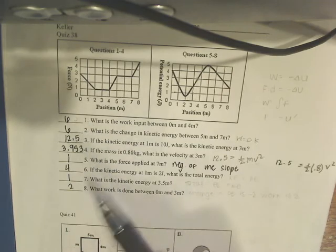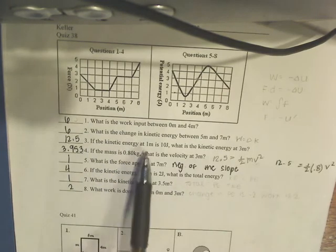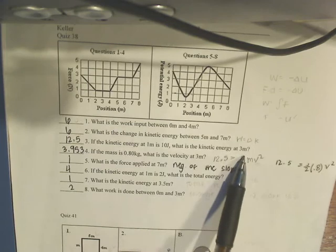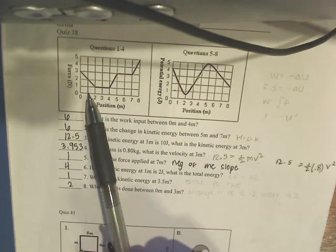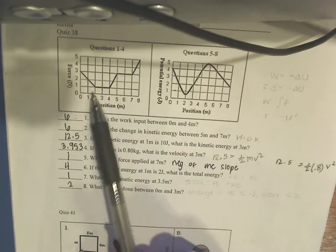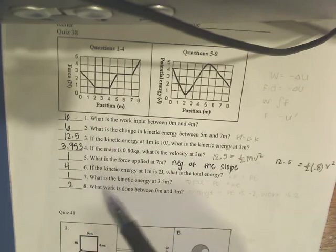So it will be 6, which is the same as 1. If the kinetic energy at 1 is 10, what is it at 3? Kinetic energy at 1 is 10, the integral from 1 to 3 is 2.5, so you do 10 plus 2.5 is 12.5.